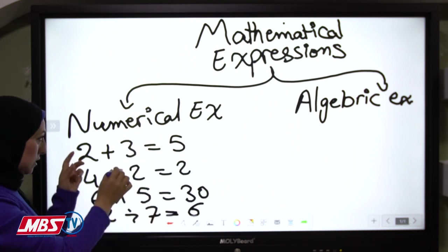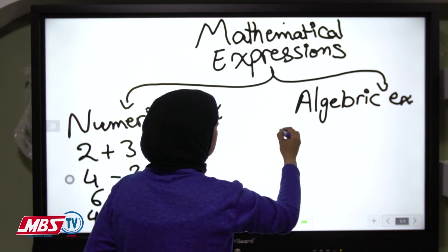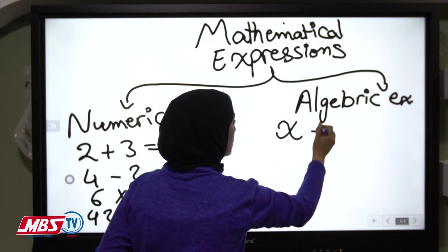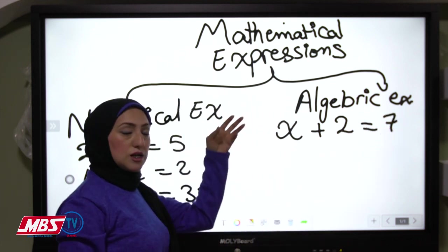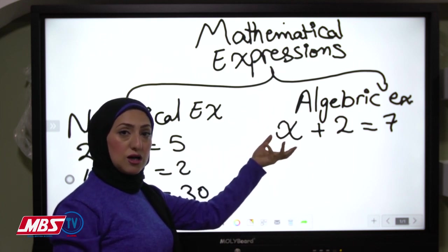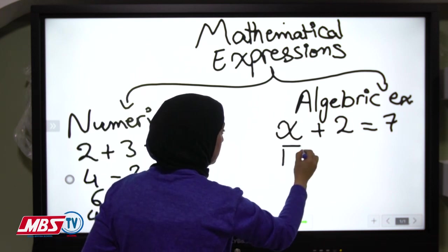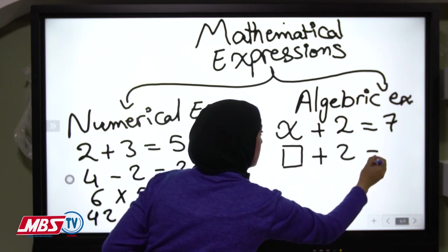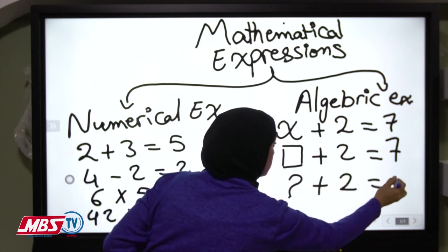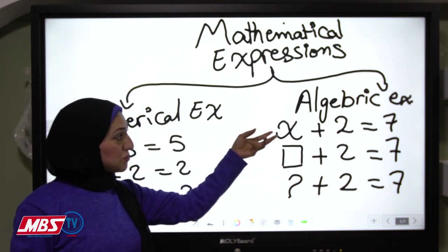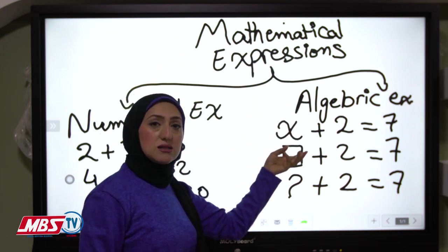All of these are called numerical expressions. In the algebraic expression, it's like x plus 2 equals 7. It has a symbol — we can call it a symbolic expression. It consists of an operation, a number, and a symbol.